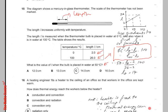Now all you have to do is plug in the numbers. Theta is given as 50. L-theta is what we're trying to find. L0 is 2 and L100 is 26. Plug in these numbers, work it out, and you'll get 14. So the correct response is C.